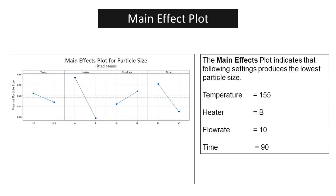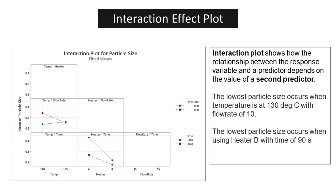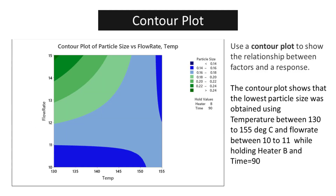The main effects plot indicates that the following settings produce the lowest particle size: Temperature = 155, Heater = B, Flow Rate = 10, Time = 90. The lowest particle size occurs when temperature is at 130 degrees Celsius with a flow rate of 10, and when using Heater B with time of 90 seconds. The contour plot shows that the lowest particle size was obtained using temperature between 130 to 155 degrees Celsius and flow rate between 10 to 11, while holding Heater B and time equals 90.